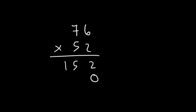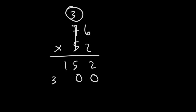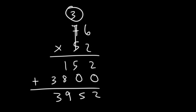Now let's write a 0. 5 times 6 is 30, so we're going to write a 0 and carry over the 3. And then 5 times 7 is 35 plus 3, that's 38. And now we need to add. So this is going to be 2, 5, 8 plus 1 is 9, and then we have a 3. So it's 3,952. That's the answer.